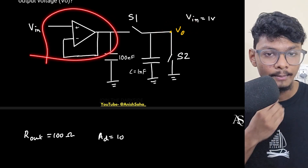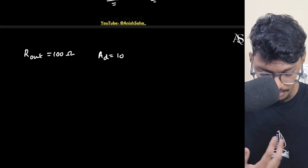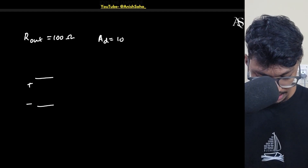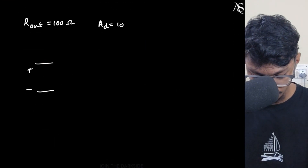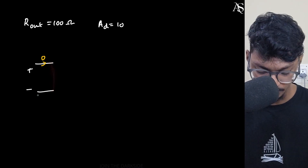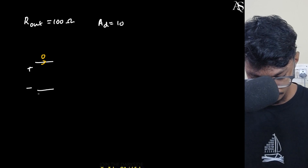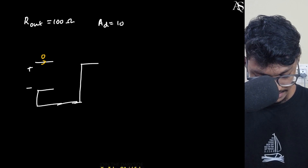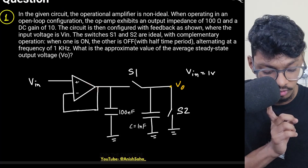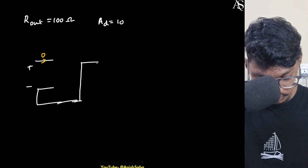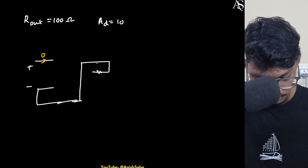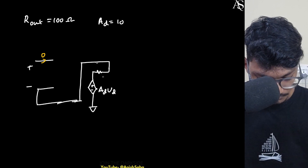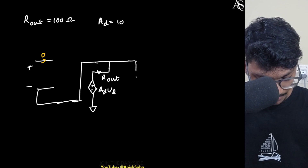Let me draw the circuit diagram of a practical, non-ideal op-amp. Input impedance is infinite, so zero current flows into the input terminals — no resistance needed between them. This is my plus terminal, this is my minus terminal. The negative terminal has feedback connected to it. The output has an output resistance Rout, and the dependent voltage source is Ad times Vd, where Vd is the differential input voltage.